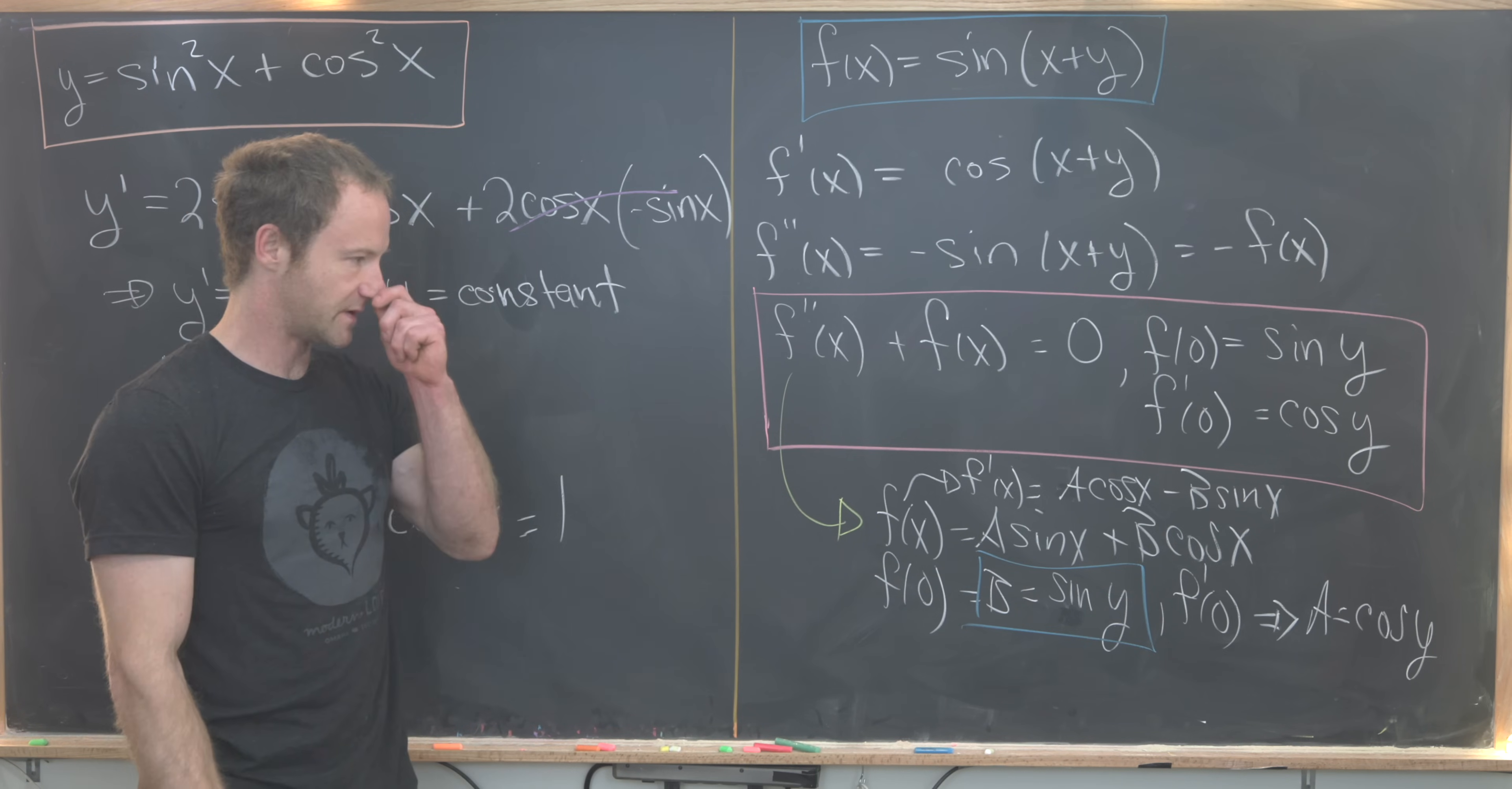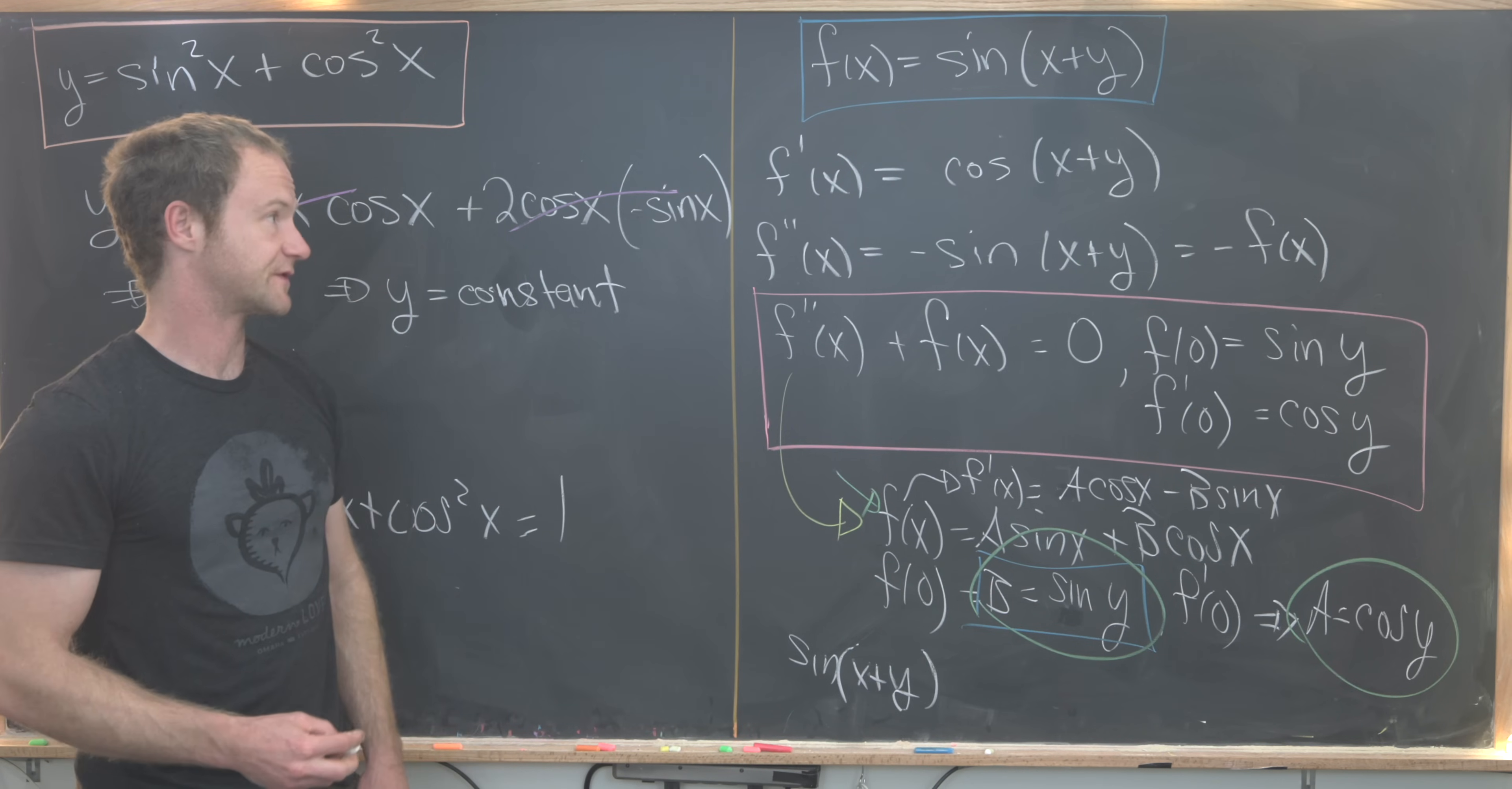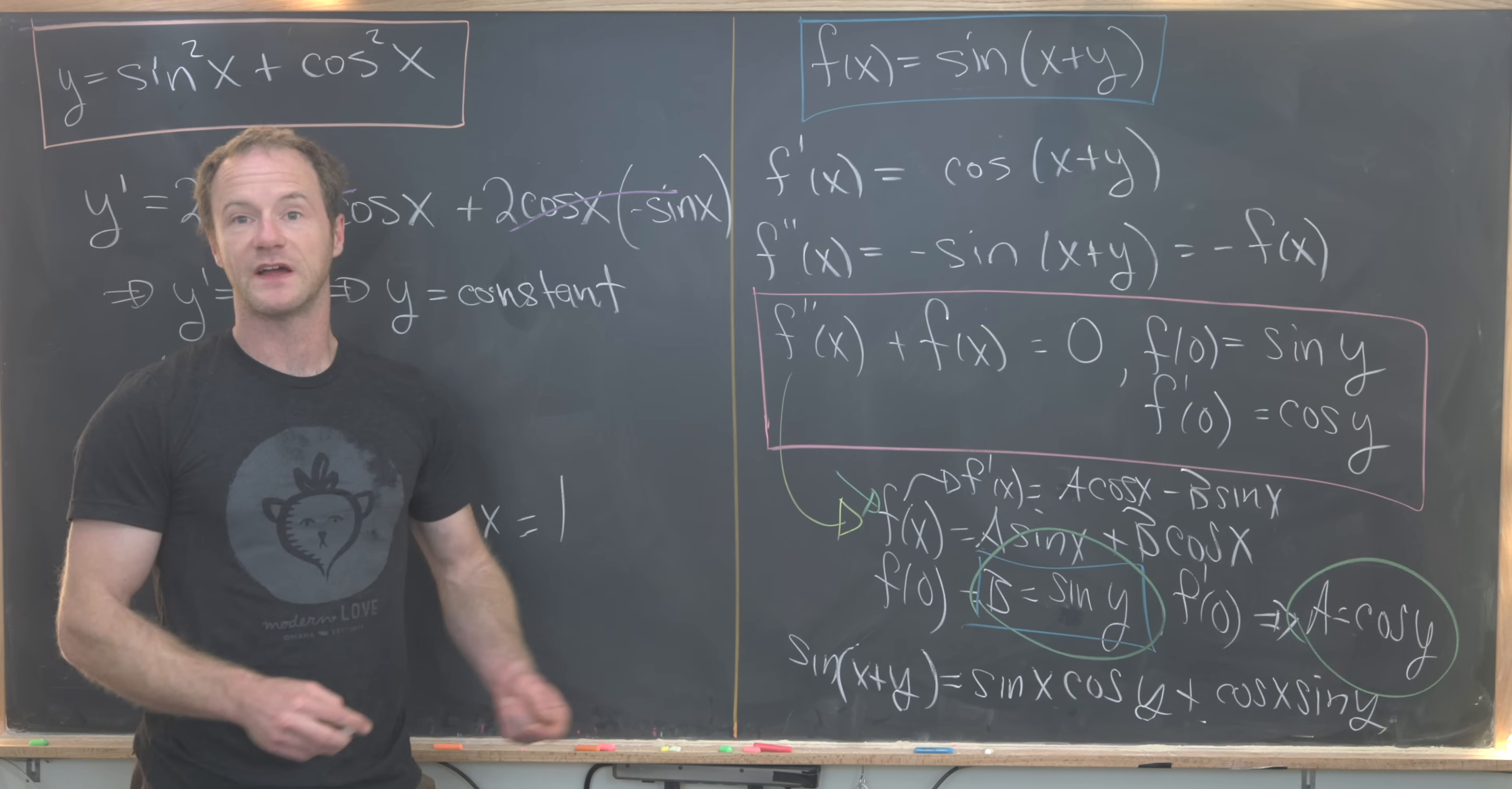Now we can take this value for A and this value for B and plug it into our expression for f(x) and compare that to our original expression. We have sin(x + y), which was our original expression for f(x), equals A sin(x)—but that's the same thing as sin(x) cos(y)—plus B cos(x), which is cos(x) sin(y). And that's a good place to stop.